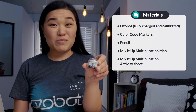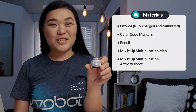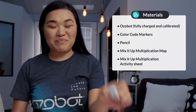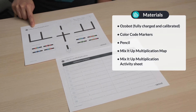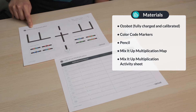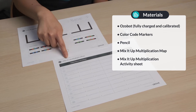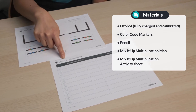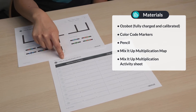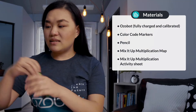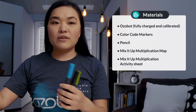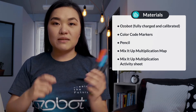For today's lesson, you will need your Ozobot fully charged and calibrated, your Mix It Up multiplication activity map, your Mix It Up multiplication activity sheet, and your color code markers.